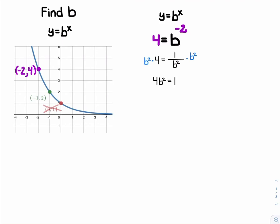Continuing to get b alone, I'm going to divide both sides by 4. Next, to get rid of squaring, I'm going to take the square root.